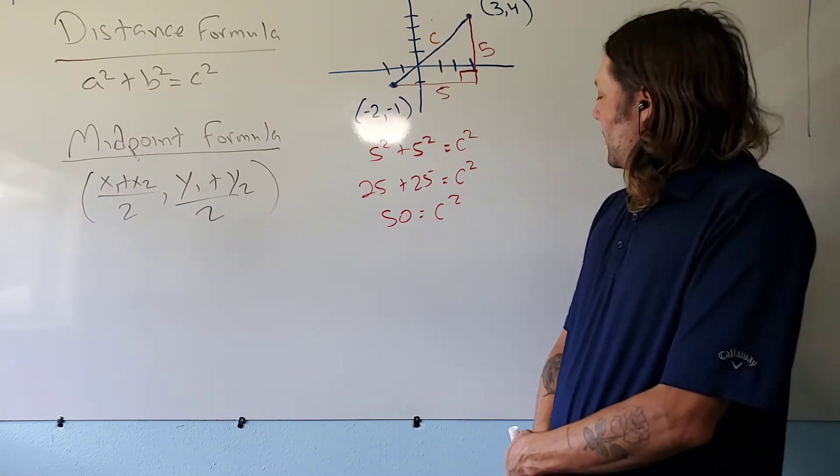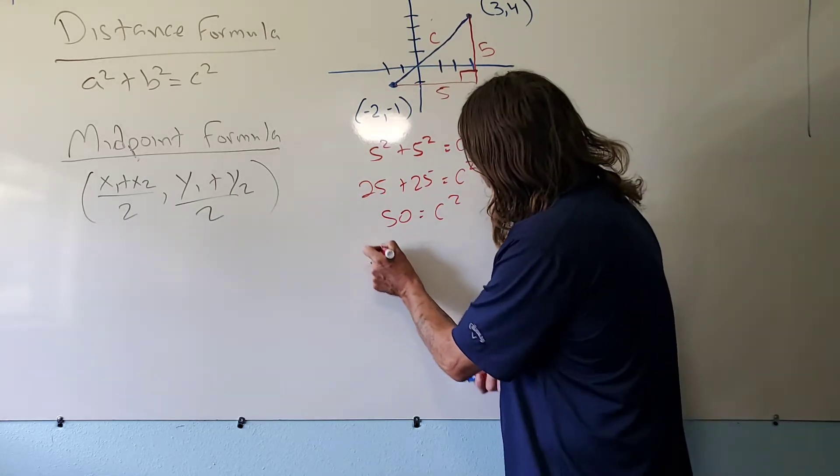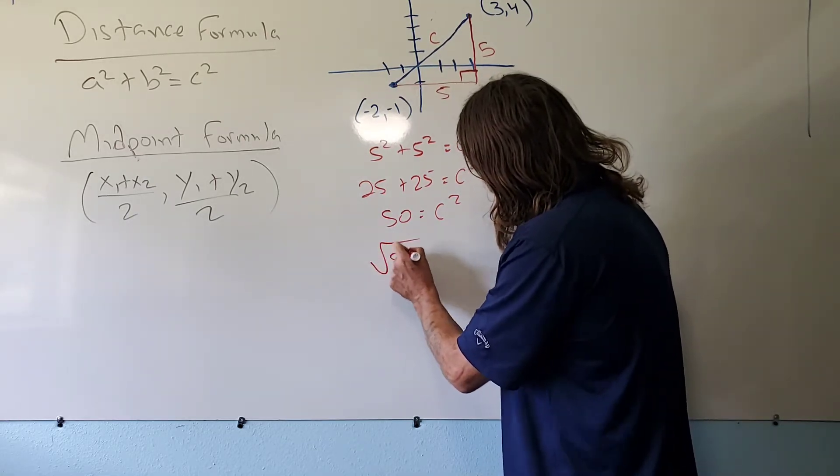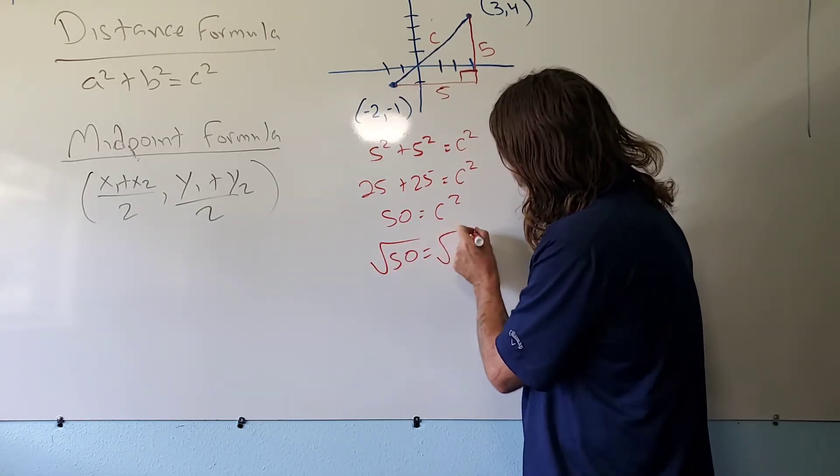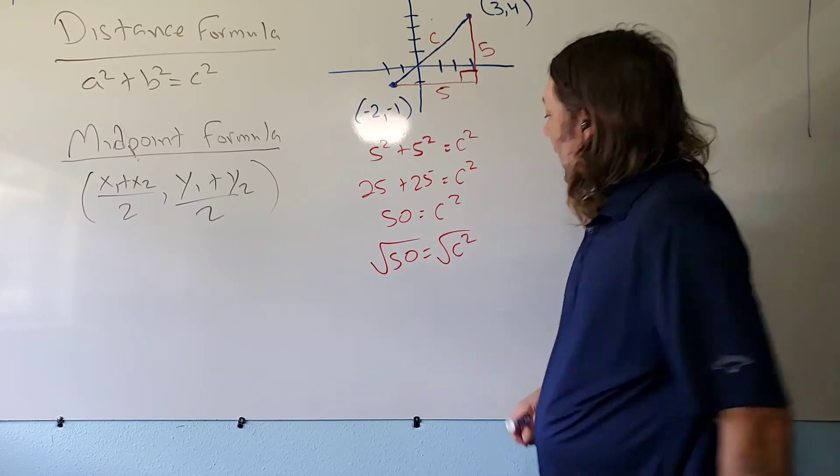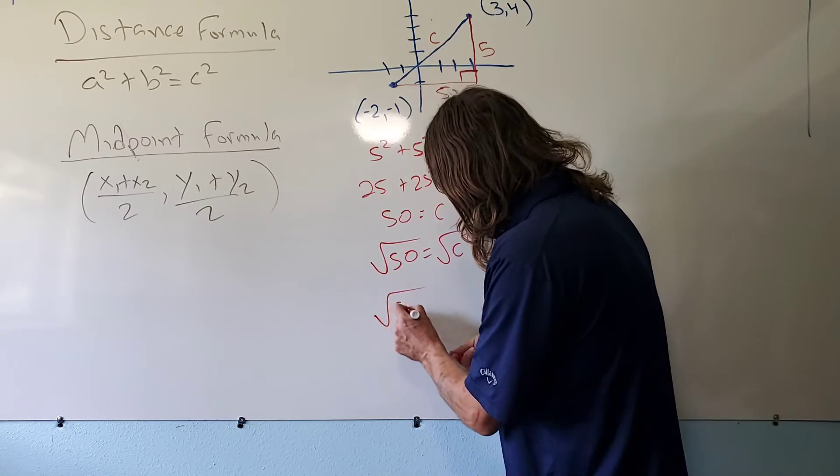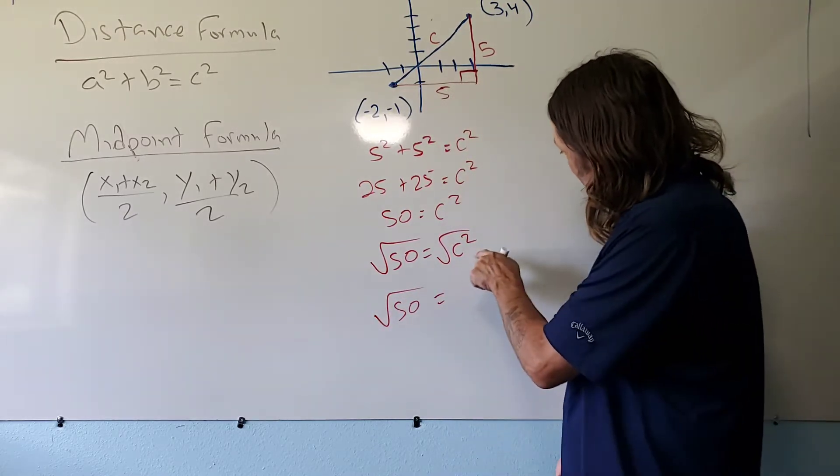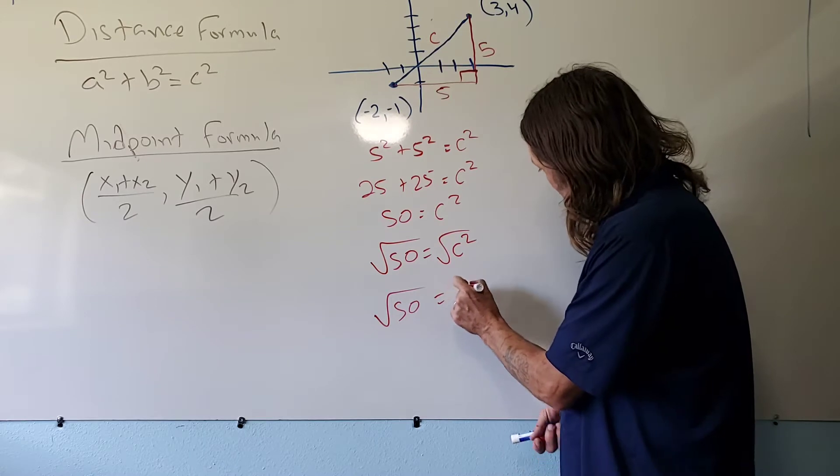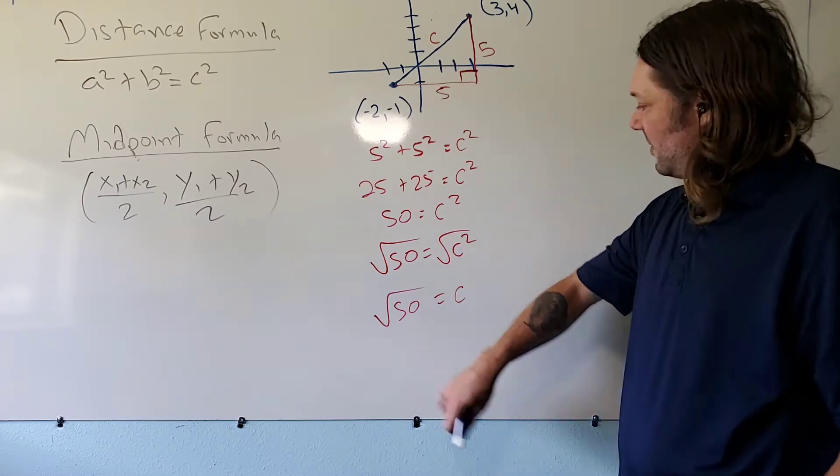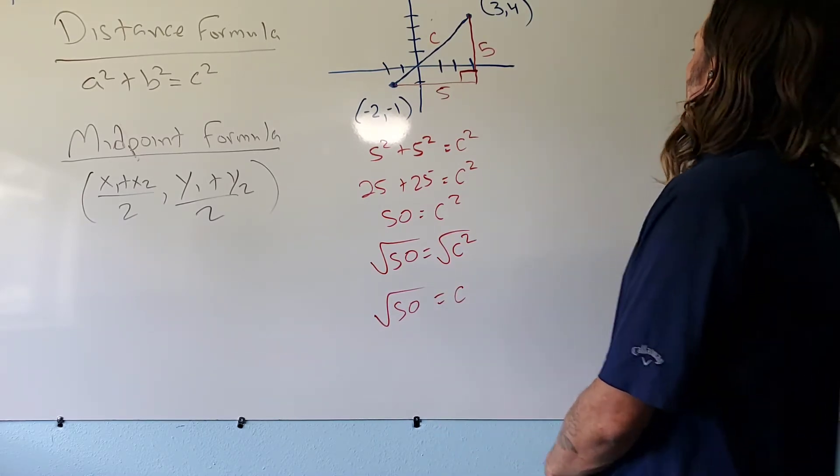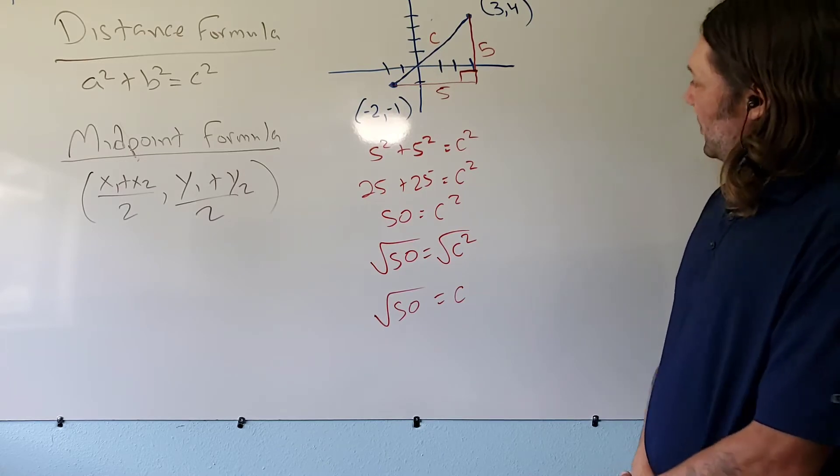And now we square root both sides to eliminate the square. I don't know what the square root of 50 is, so I'm just going to leave it like this: square root of 50. And I can now eliminate the square with my square root, and I'm left with c. So this has a diagonal length of square root of 50.